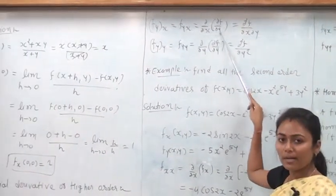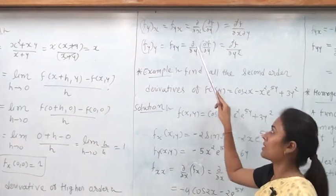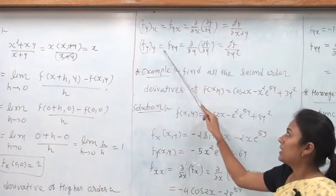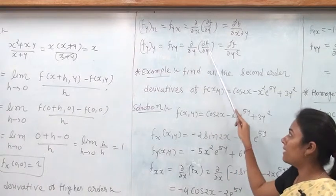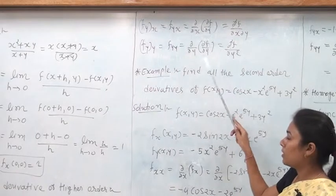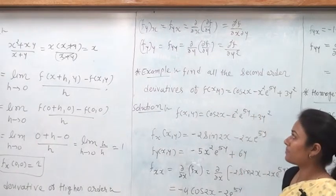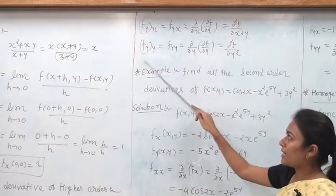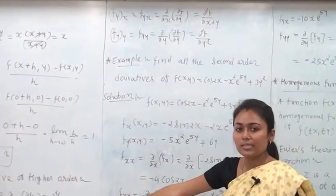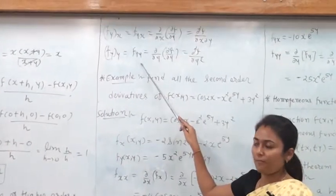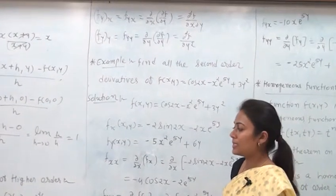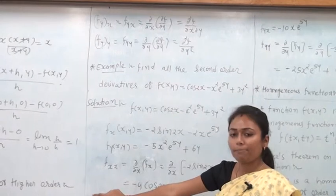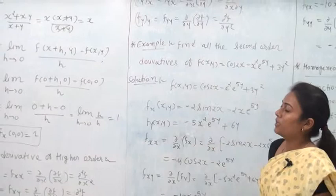If you find ∂f/∂y and differentiate a second time with respect to x, you get ∂²f/∂x∂y, which is f_yx. If you differentiate ∂f/∂y with respect to y again, you get ∂²f/∂y², which is f_yy. There are four second-order derivatives: f_xx, f_xy, f_yx, and f_yy. To find all second-order derivatives, first find f_x and f_y, then compute these four.